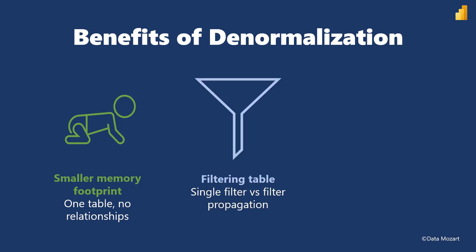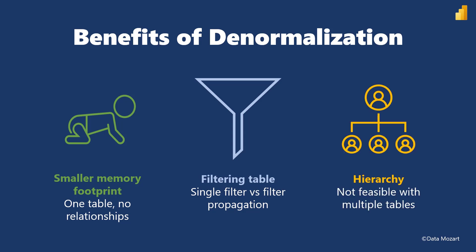Filter propagation between tables can sometimes be less efficient than filters applied to a single table. Additionally, it's not possible to establish a hierarchy between fields from multiple tables. So if you need to create a hierarchy of product category, subcategory, and product itself, you must have all these columns available within a single table.